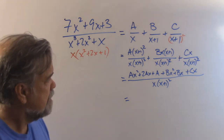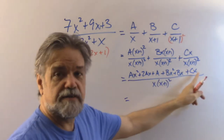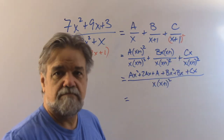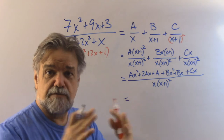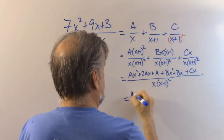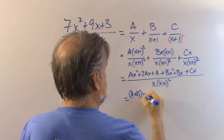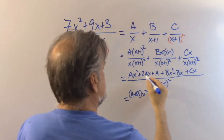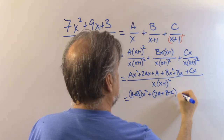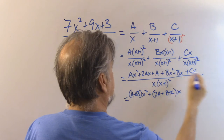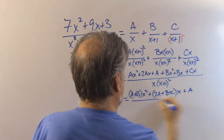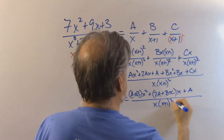All I did here is I just multiplied out and distributed. Now it's time to combine like terms. So let's get our x squareds together: a plus b times x squared. Now our x's: 2a plus b plus c times x, and our constant term, which is just a, all over x times x plus 1 squared.